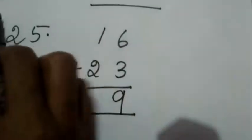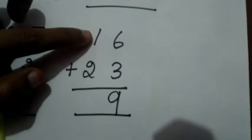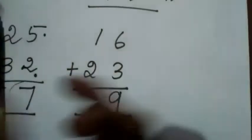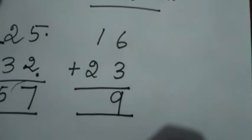Then see the second-digit numbers: 1 and 2. So 1 in your mind, 2 on your finger. 1 after: 2, 3. Answer is 39.